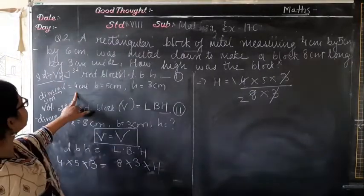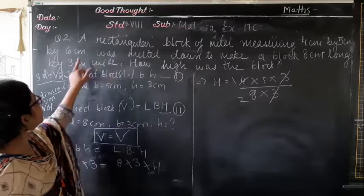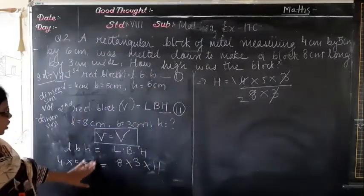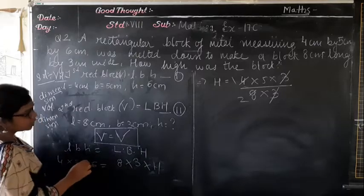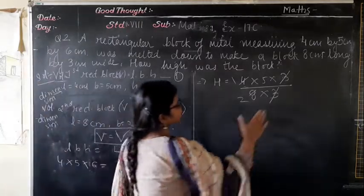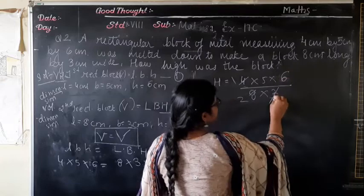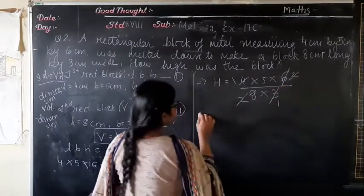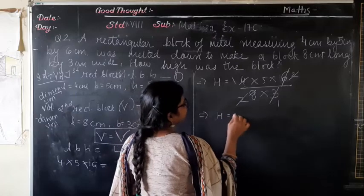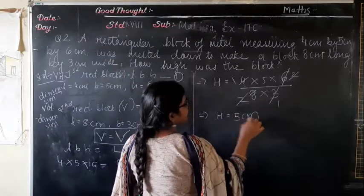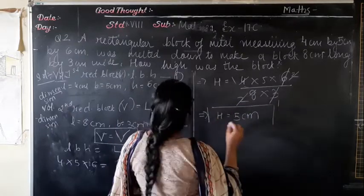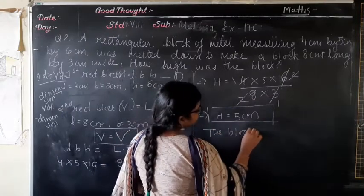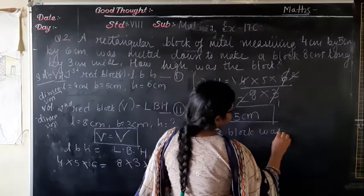The measurement given is 4 × 5 × 6. The 3s cancel and simplification gives H = 5 cm. So the block was 5 cm long.